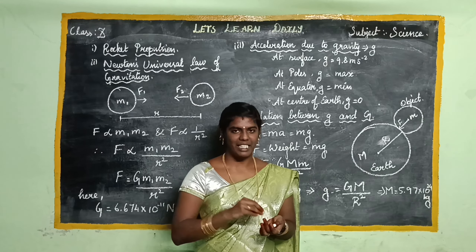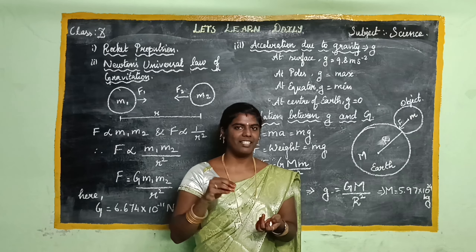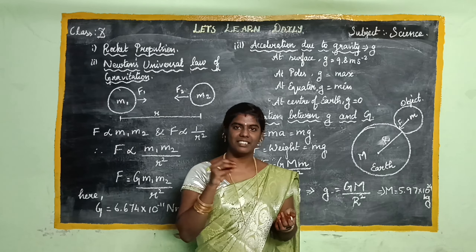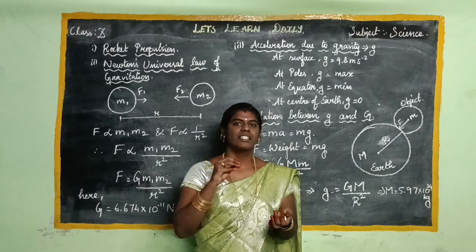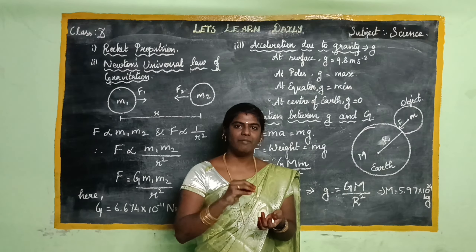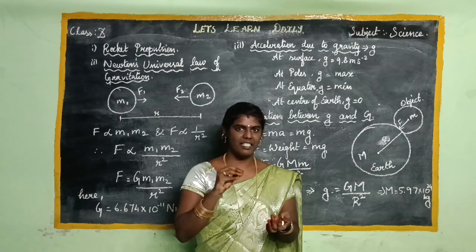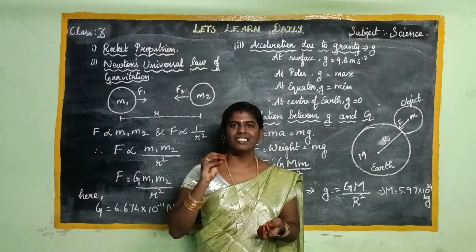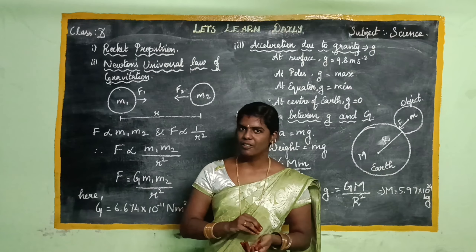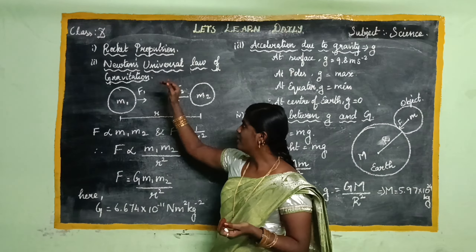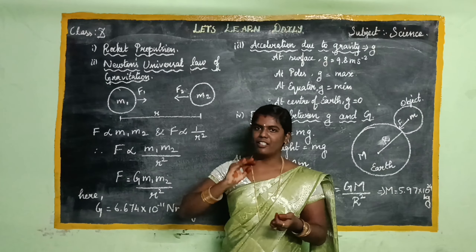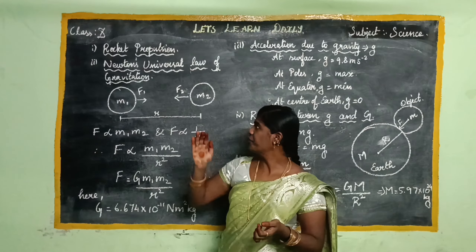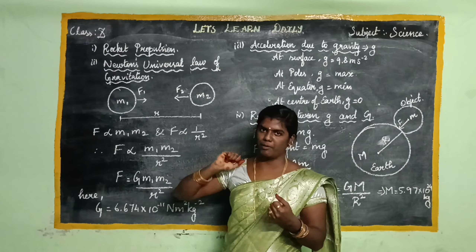It will reach a certain velocity, and that velocity is called escape velocity, which is the minimum velocity needed for an object to escape from the Earth's gravitational pull. That is the rocket propulsion process.